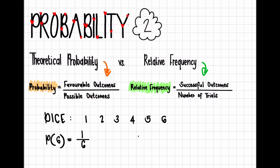And I could do that for any of the numbers. For example, what is the probability of the dice landing on a three? I would look at my number of favorable outcomes, which is one, out of my number of possible outcomes, which is six. So I have a one out of six chance of it landing on a three. That means I have an equal chance of it landing on a one, two, three, four, five, or six, because we have one of each available.